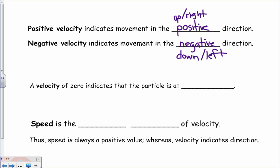A velocity of zero indicates that the particle is at rest. Now, it also just might be changing directions, from a positive direction to a negative, or vice versa.